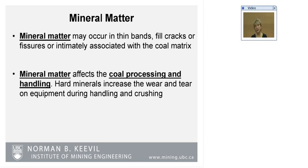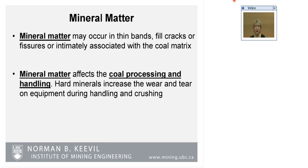The type of occurrence of mineral matter can be quite various. Mineral matter can be in vents, can be part of the fulvic cavities of cracks. Quite often, as you've seen from the photomicrographs, fusenade is contaminated with some mineral matter which fills the cavity of fusenade. If you were to separate fusenade, in many cases it might have a higher ash content. Mineral matter affects the coal processing and handling — hard minerals will increase the wear and tear of equipment during handling and crushing.